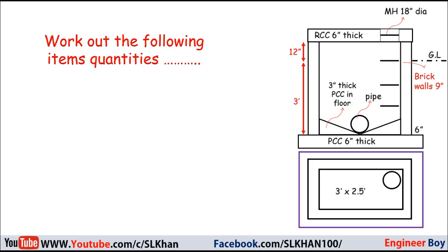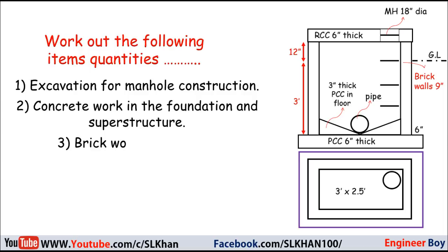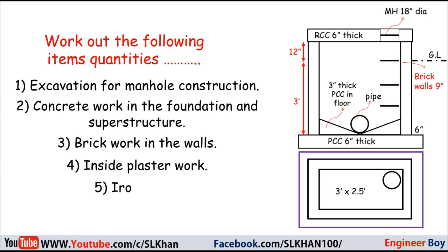We are asked to work out the following quantity items: first, excavation for manhole construction; second, concrete work in the foundation and superstructure; third, brickwork in the walls; fourth, inside plaster; and fifth, iron steps. It's quite simple, so let's go directly into the solution and abstract quantities.